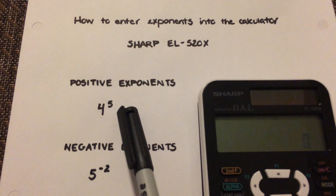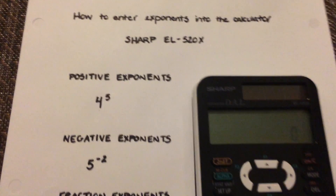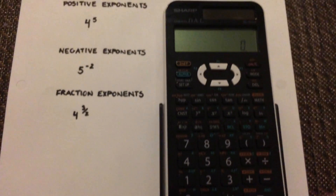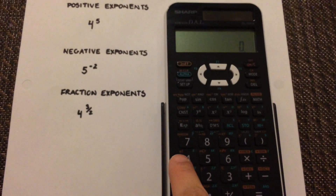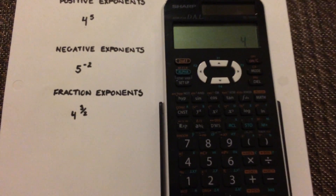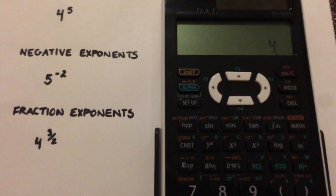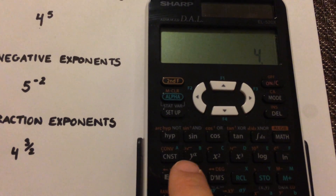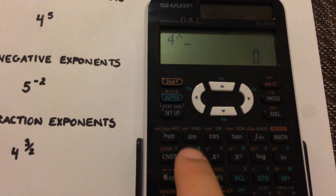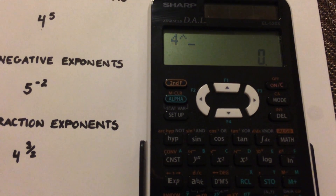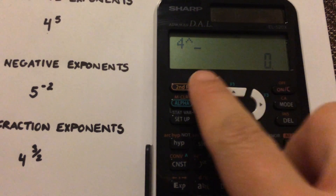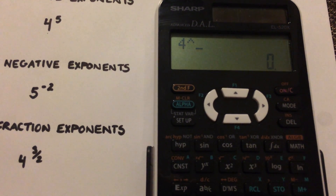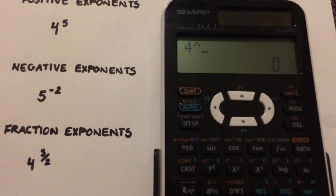For example, 4 with an exponent 5. Go to your calculator and select 4. Then you'll see this function here — y to x — so you're going to select that. You'll see the triangle shows up on your screen; that's an exponent.